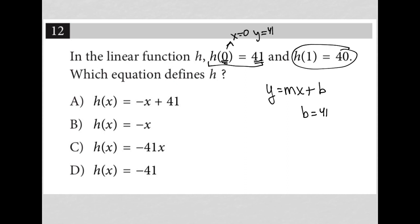h of x, f of x, g of x, doesn't matter. Same as y. So I know that I need to have a 41 for my y-intercept, and therefore I know that the answer has to be choice A because it's the only answer choice that has 41 as a y-intercept.